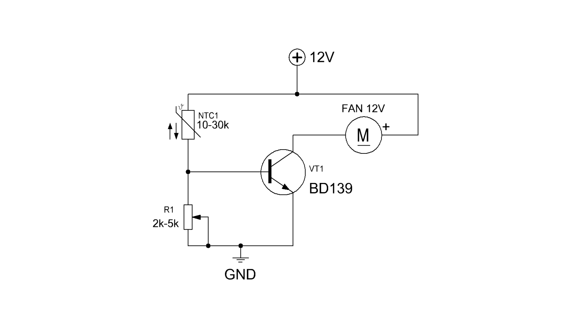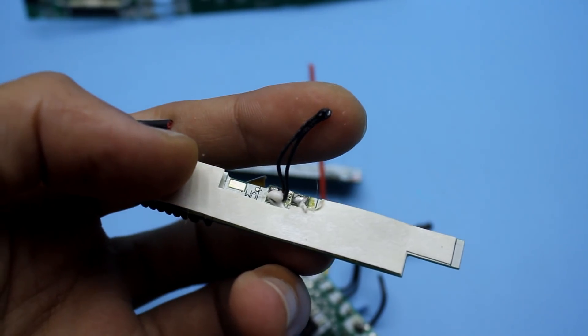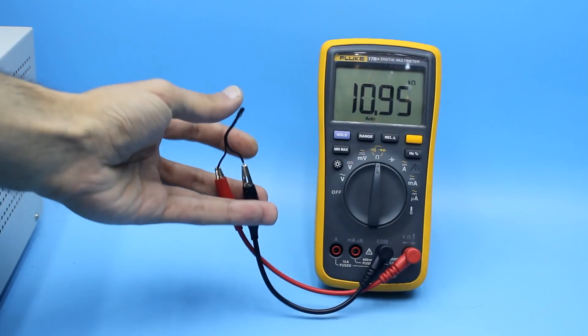The first circuit is built on a single transistor. The temperature sensor is a thermistor with a negative temperature coefficient or NTC. That is, when it is heated, it reduces initial resistance.